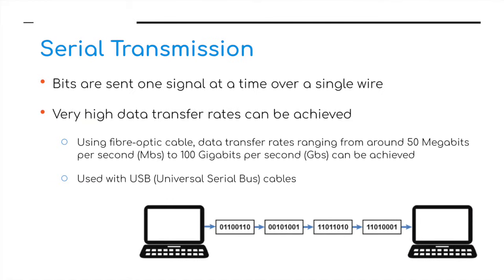Now for the two types of data transmission. Serial transmission is where bits are sent one bit at a time over a single wire. Very high data transfer rates can be achieved — for example, using fiber optic cable, data transfer rates ranging from around 50 megabits per second up to 100 gigabits per second can be achieved. Serial data transmission also sometimes uses USB, Universal Serial Bus, cabling.